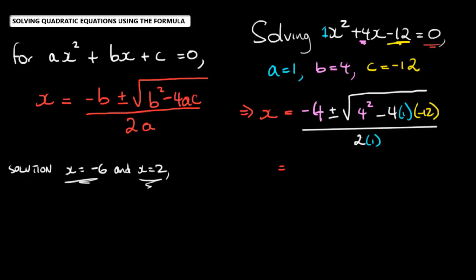Because now, that means x is going to be equal to negative four plus or minus the square root of four squared is 16 minus four times one is negative four. And negative four times negative 12 is going to give me a positive 48. So it would be 16 plus 48 under the root sign. And all of that would be over two times one, which would just be two.